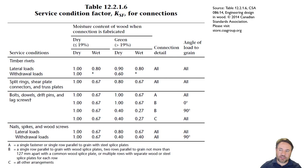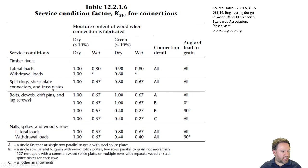The service condition factor table for connections depends on fabrication process, type of connection, and type of loading. We have timber rivets, split rings, shear plate connectors, and truss plates — we won't encounter those here. For bolts, dowels, drift pins, and lag screws there is one set; and nails, spikes, and wood screws are another set.